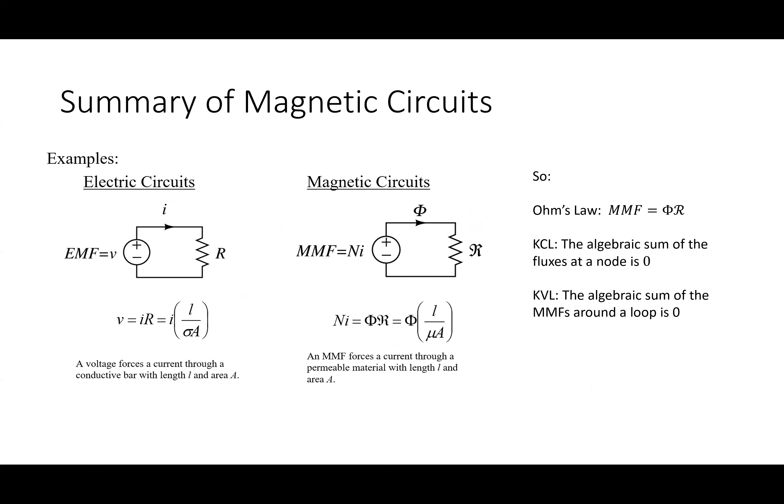In the electric circuit analogy: voltage sources cause current to flow through resistance. In a magnetic circuit, we have an MMF source — a magnetomotive force — which makes flux move, and reluctance resists the flow of that flux. The resistance formula is length divided by area times conductivity, so a good conductor like copper has very low resistance because conductivity is very large.